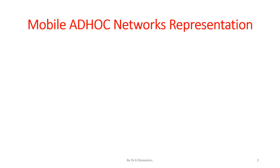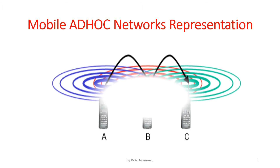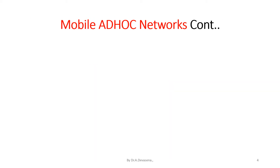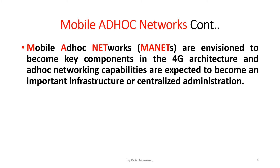A representation of Mobile Ad Hoc Networks is shown here. We have three mobiles: Mobile A has a signal range indicated by blue color, Mobile B has a signal range indicated by red color, and Mobile C has a signal range indicated by green color. This forms a type of mobile ad hoc network. MANETs are envisioned to become key components in the 4G architecture, and ad hoc networking capabilities are expected to become an important infrastructure.